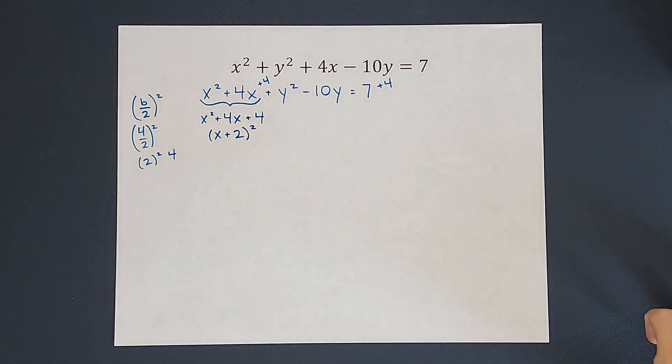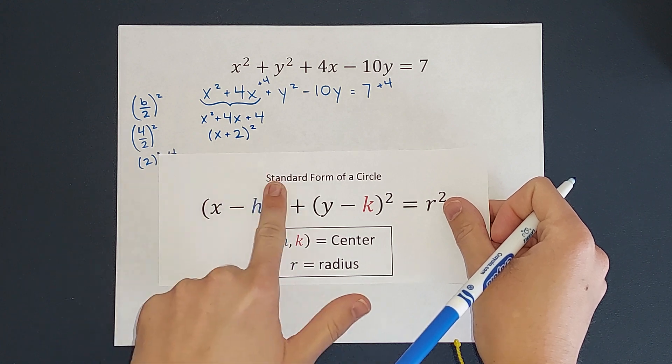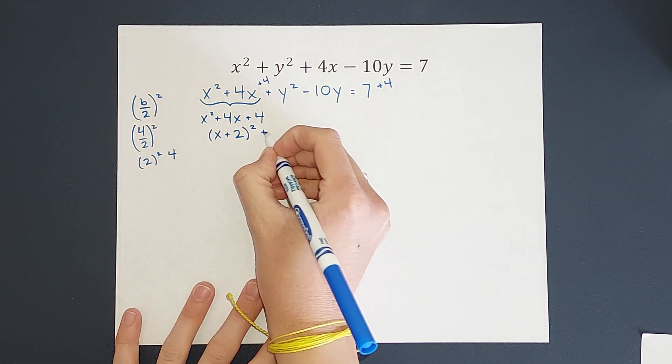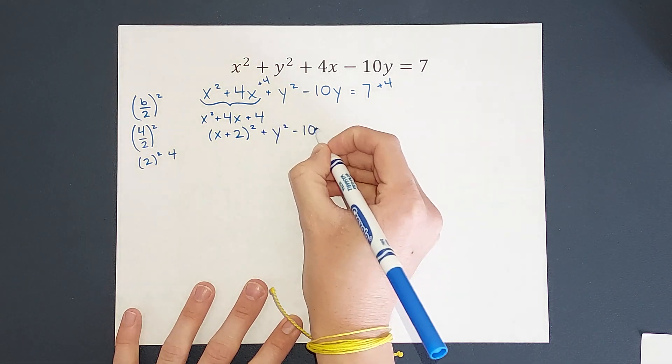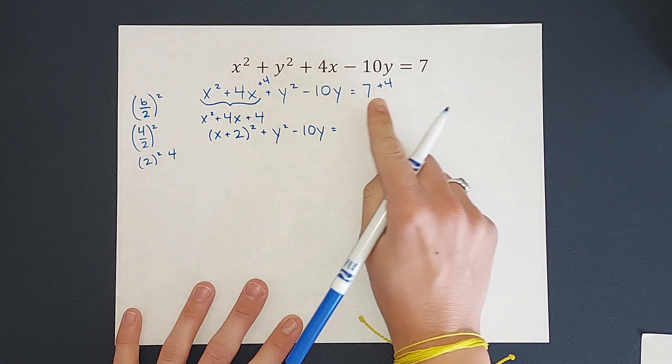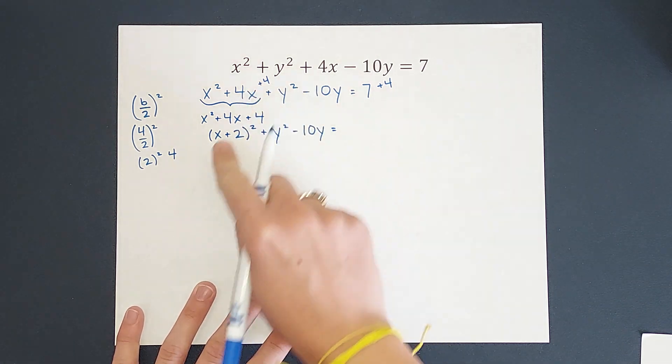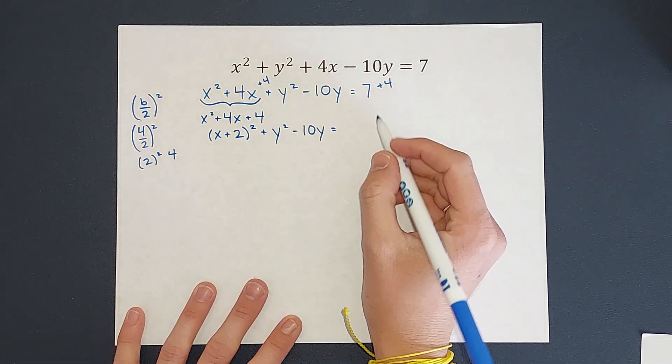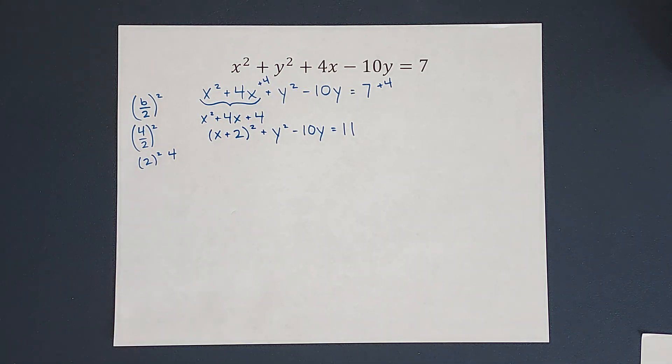Okay, so, so far, I'm getting a little closer, right? I have a parentheses squared. Now, I still have that plus y squared minus 10y equals, and I have the 7 plus 4. Remember, adding 4 to this side is what made it so I could factor it nicely like that. So I've got to make sure I add the 4. So then on this side, I have 11.